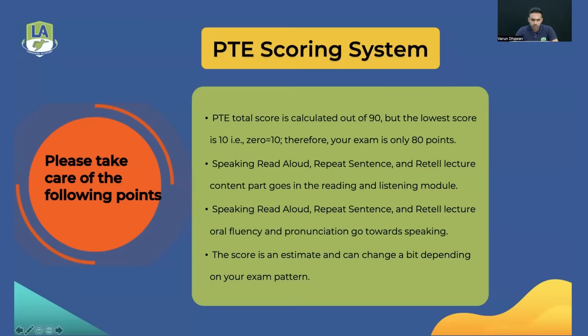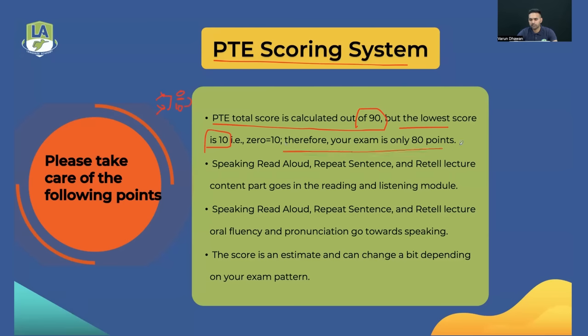I'll be sharing my screen, showing you the calculation, the contribution, which tasks are important and which are not. At the end I'll give you a practice plan with the latest marking distribution. Your points are calculated out of 90, but the lowest score in PTE is 10 — so 10 is equivalent to 0, meaning your exam is effectively only 80 points in each module.